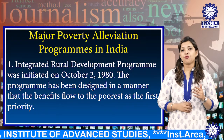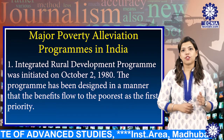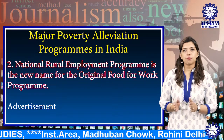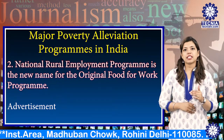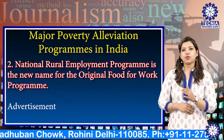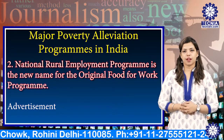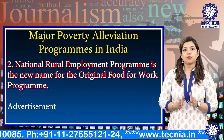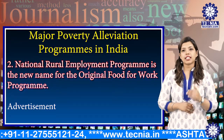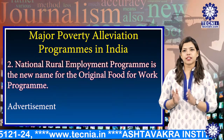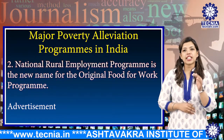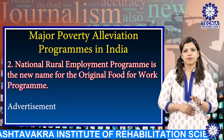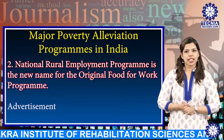The second program is the National Rural Employment Programme, which is the new name for the original Food for Work Programme. It is centrally sponsored, with the central government providing 50% assistance. The target is to create additional employment for around 300 to 400 million man-days annually.